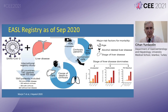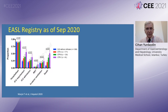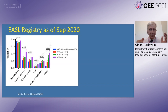This is an important registry — the EASL registry — because it encompasses a large group of patients. The study showed that the blue bar represents chronic liver disease without cirrhosis, red bars represent compensated cirrhosis, and green and purple bars are Child-Pugh B and C cirrhosis respectively. The main message is: the more advanced the cirrhosis, the higher the ICU requirement, ICU admissions, invasive ventilation, and death.